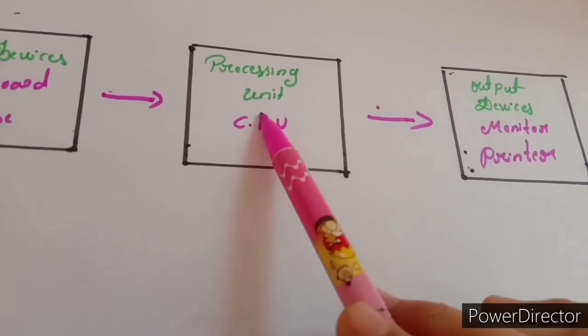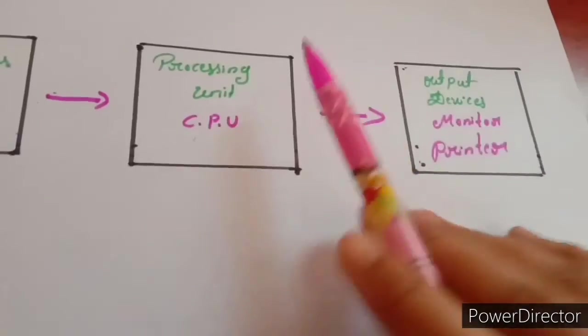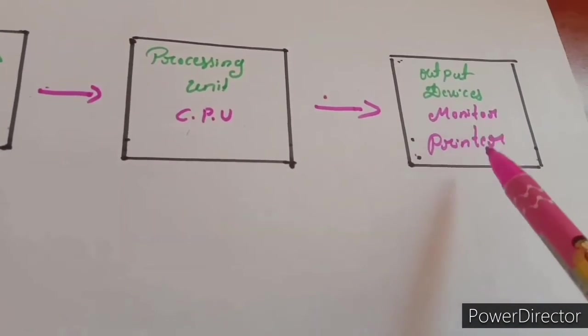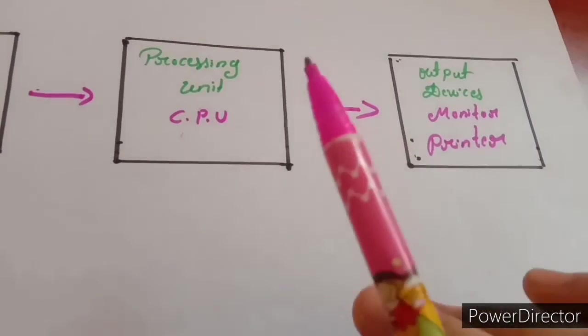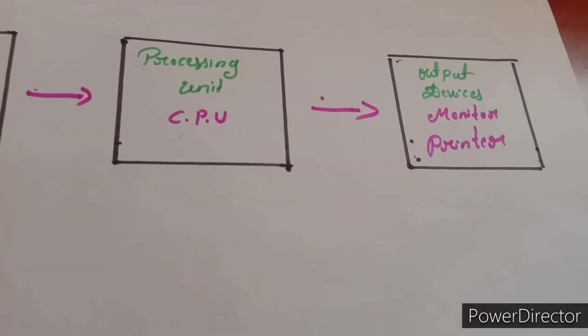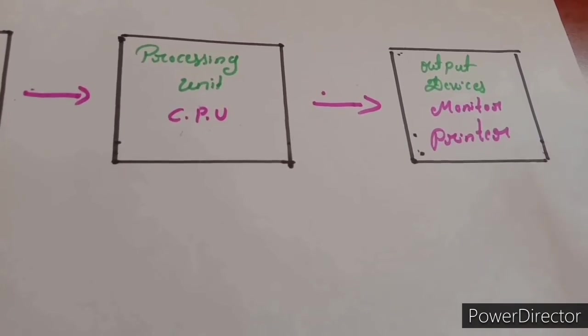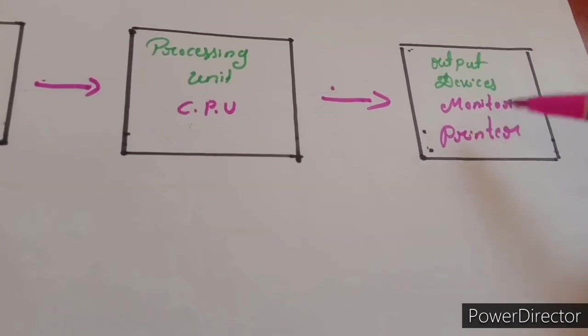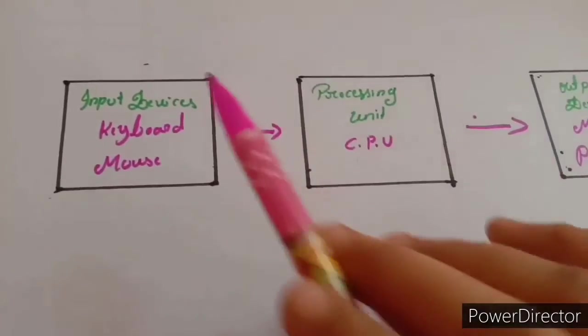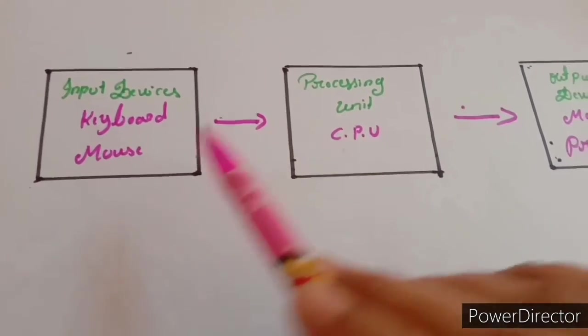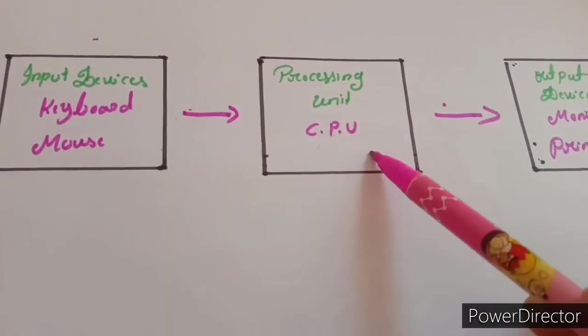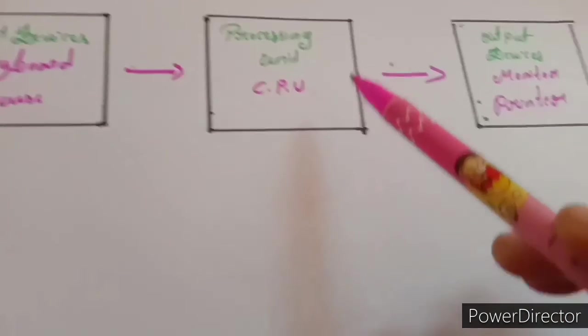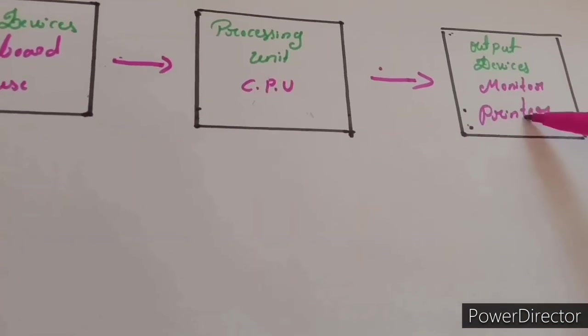The Next Output Device: Monitor And Printer. The Monitor Displays The Information Generated By The CPU. If You Want, You Can Print The Output With The Help Of A Printer. Hence The Monitor And Printer Are Output Devices. To repeat, Input Devices are Keyboard And Mouse, Processing Unit is CPU, Central Processing Unit. The Output Devices are Monitor And Printer. Dear Students, Understand This Topic. Thank You.